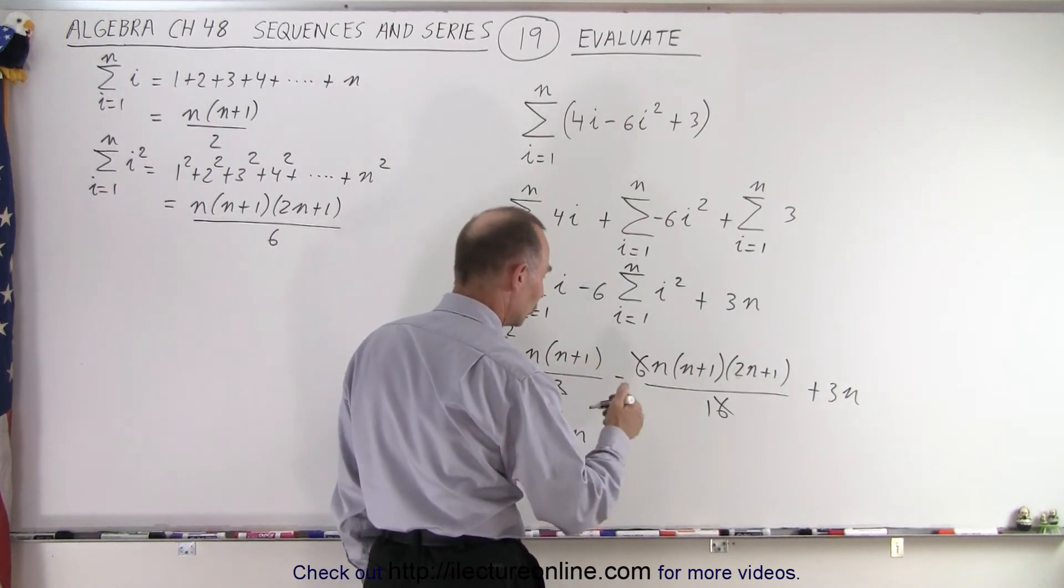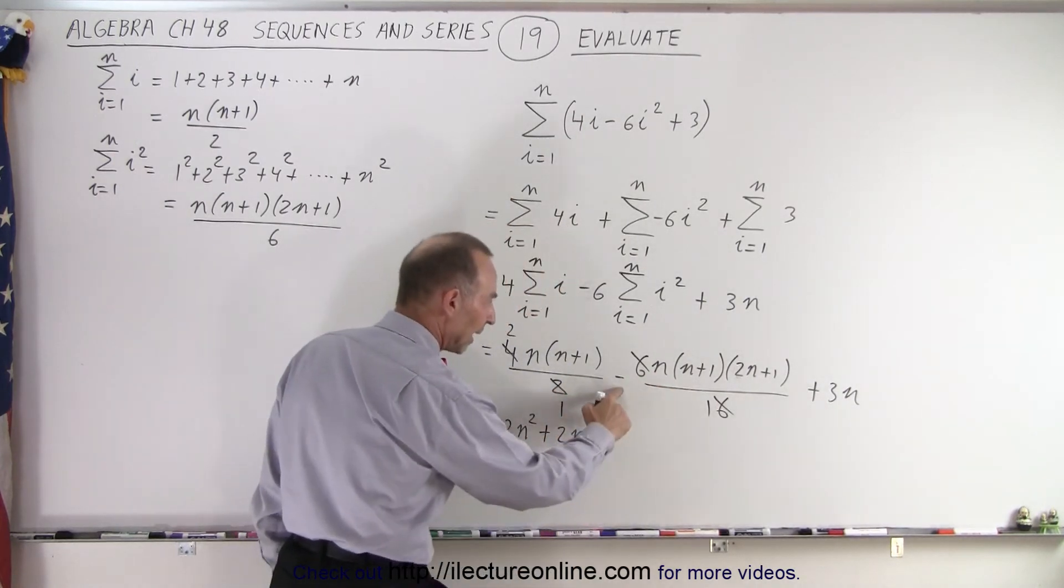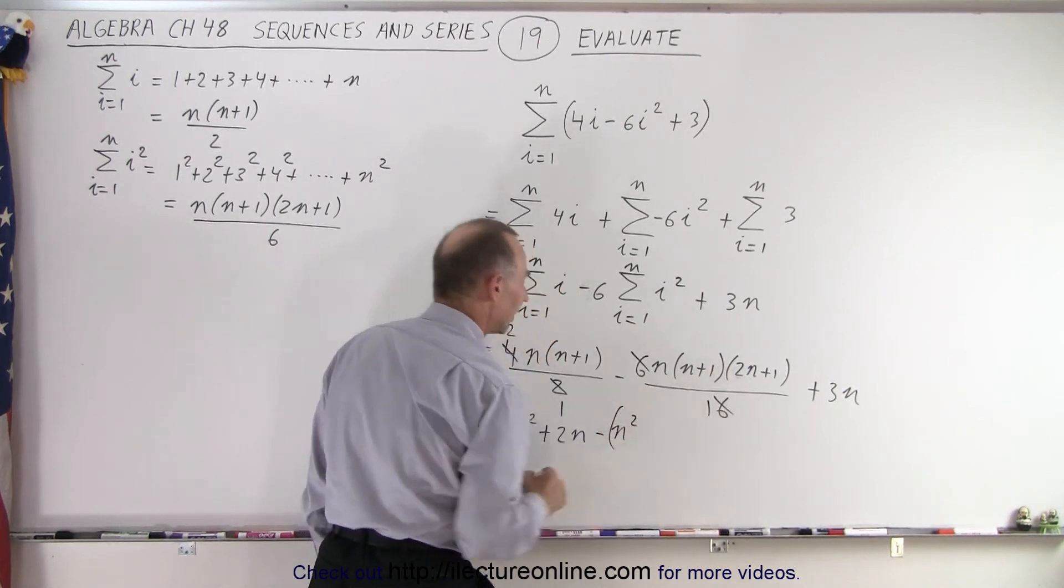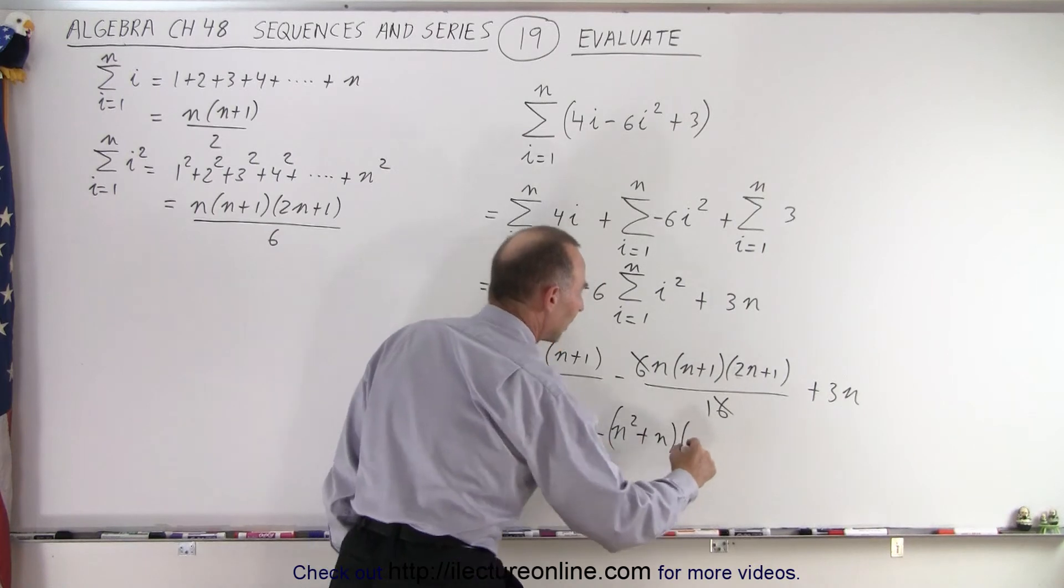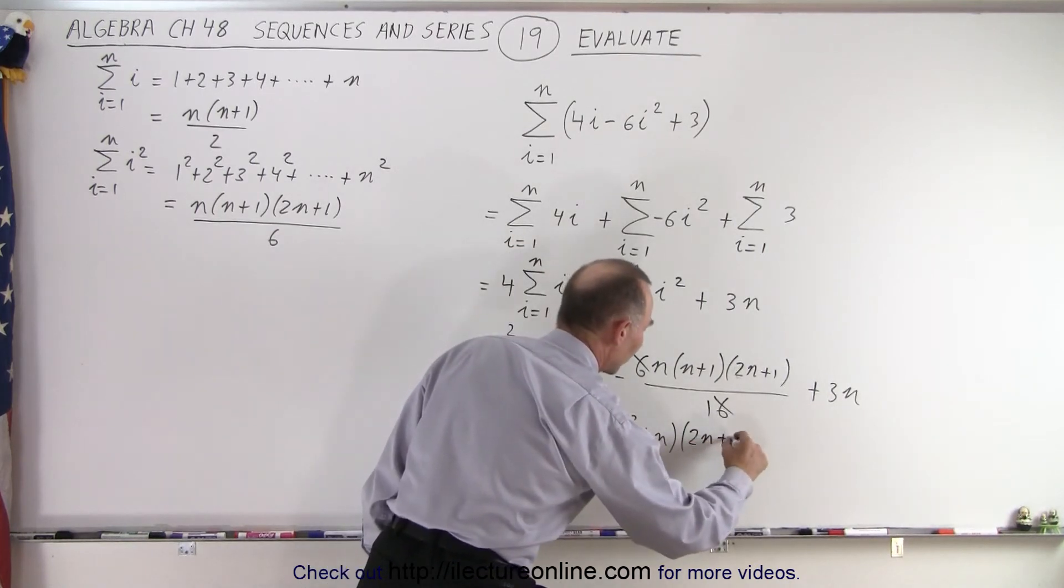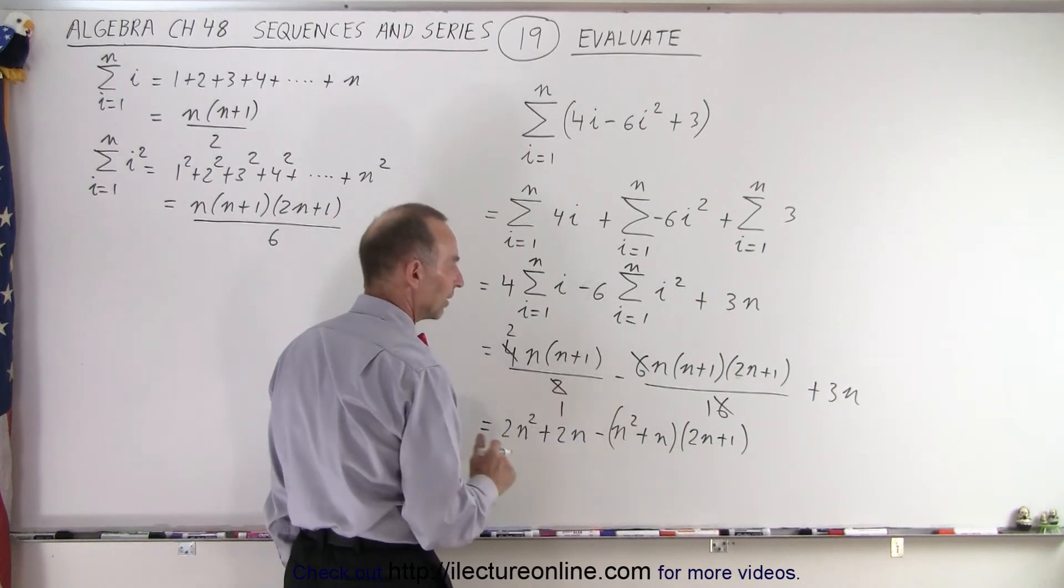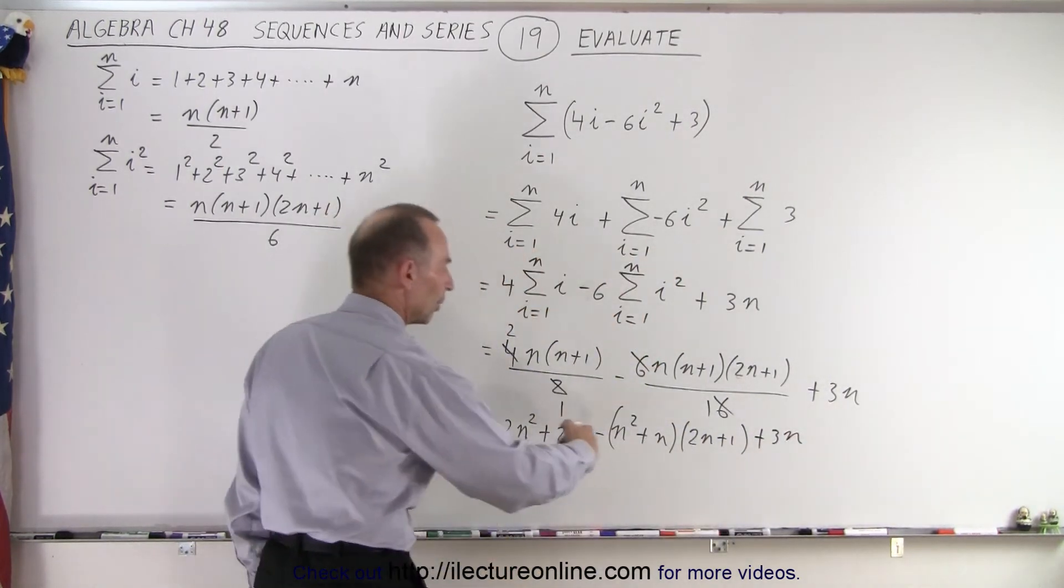We probably want to do it in two terms, so this is minus, so n times that is n squared plus n, and multiply that times 2n plus 1. It's probably a little bit easier to do in two steps like this. I keep the negative out here and then plus 3n at the end. So now I'm going to multiply this out.